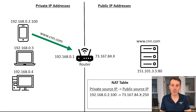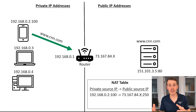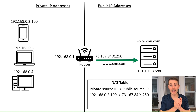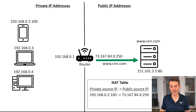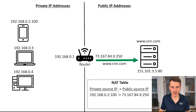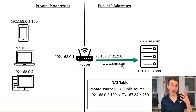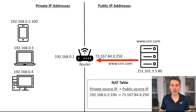Your router assigns a random port number for this communication, and a mapping is kept in the NAT table so your router can track what devices on your private network are requesting what information from the public network. Your router then takes that request from your mobile device, uses the public IP address, and reaches out to the public website — CNN.com — using 73.167.84.x port 250. What CNN.com sees is only the request from your public IP address, allowing public-to-public IP communication.